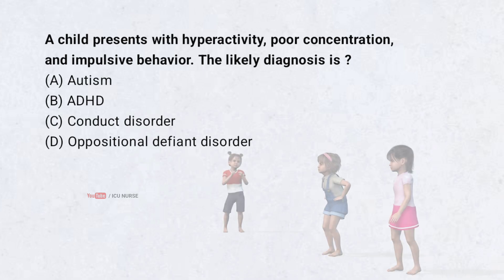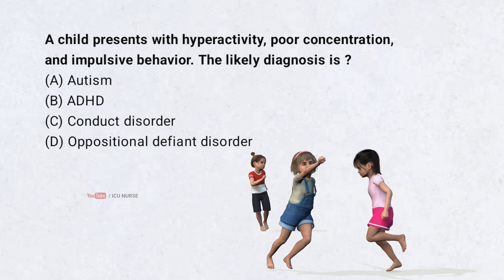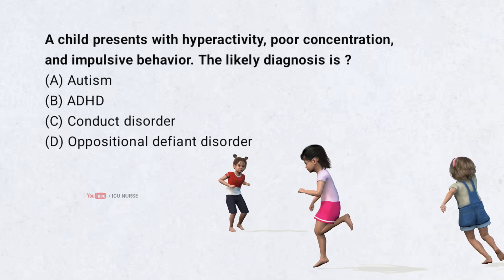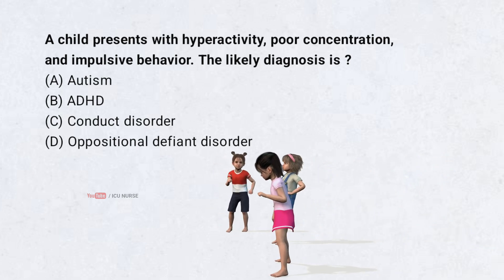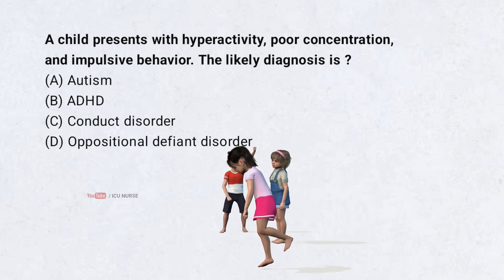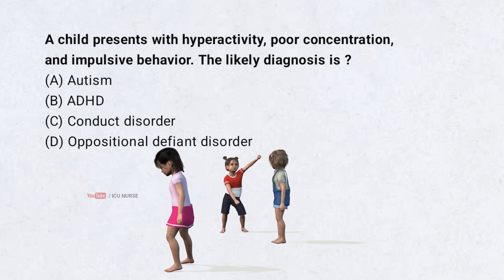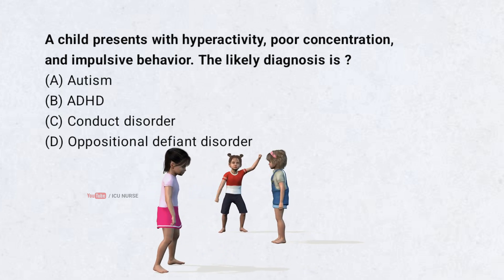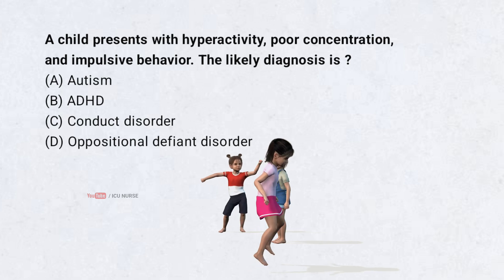A child presents with hyperactivity, poor concentration, and impulsive behavior. The likely diagnosis is: A. Autism. B. ADHD. C. Conduct disorder. D. Oppositional defiant disorder. Correct answer: B. ADHD.